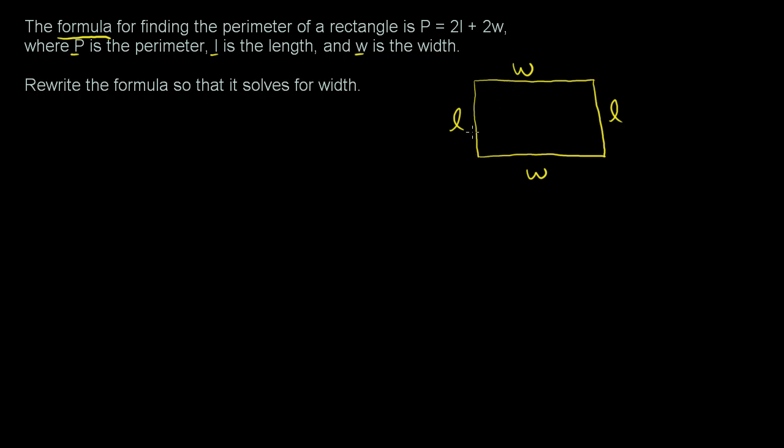The perimeter is just what is the distance if you were to go around this rectangle. So that distance is going to be this w plus this l plus this w, or that width, plus this length. If you have one w and you add it to another w, that's going to give you two w's.